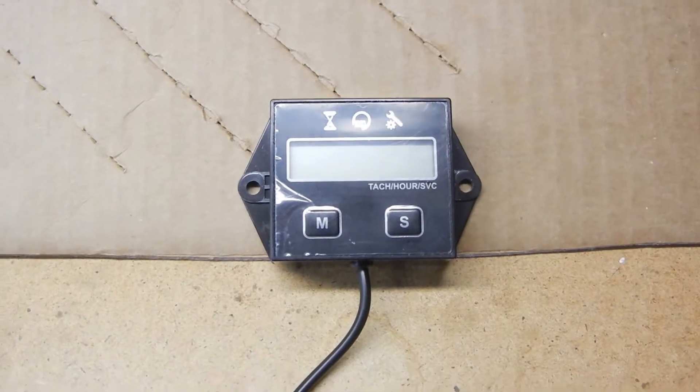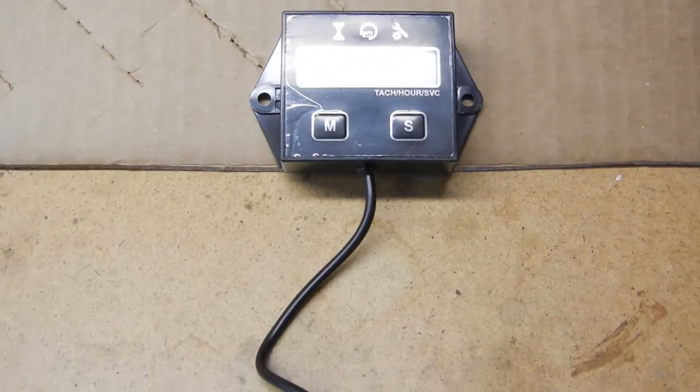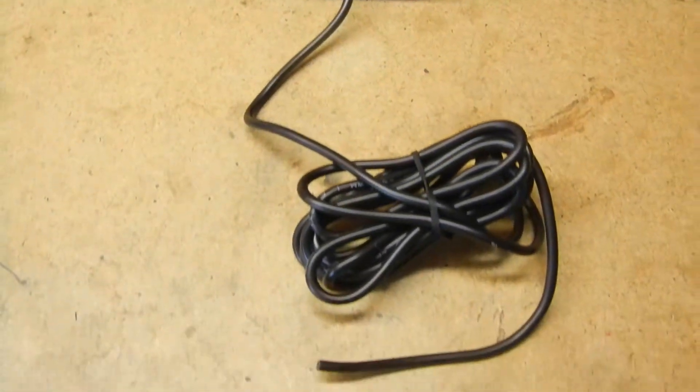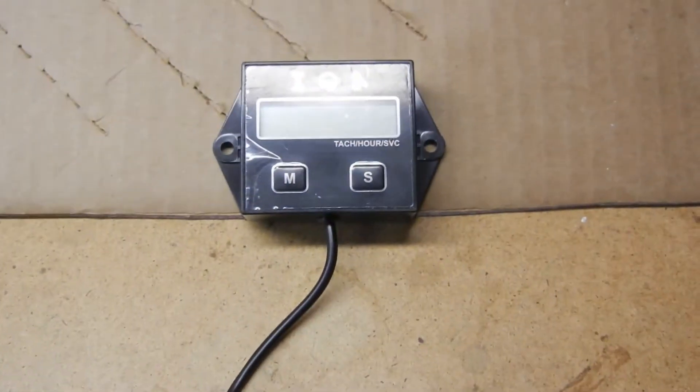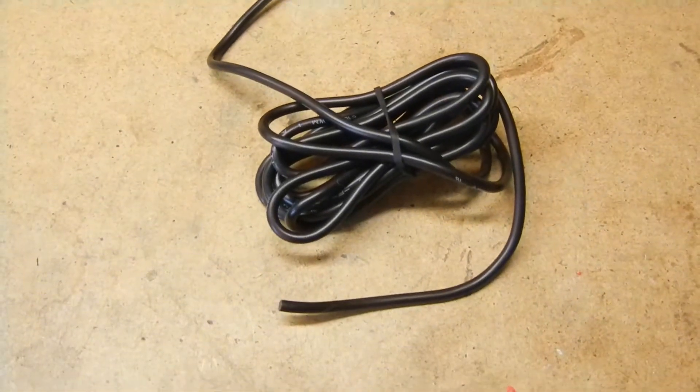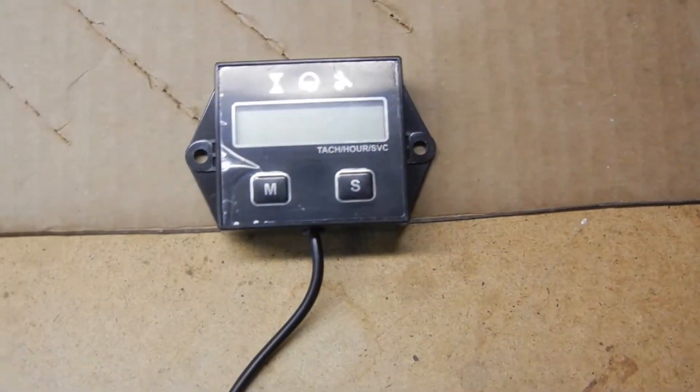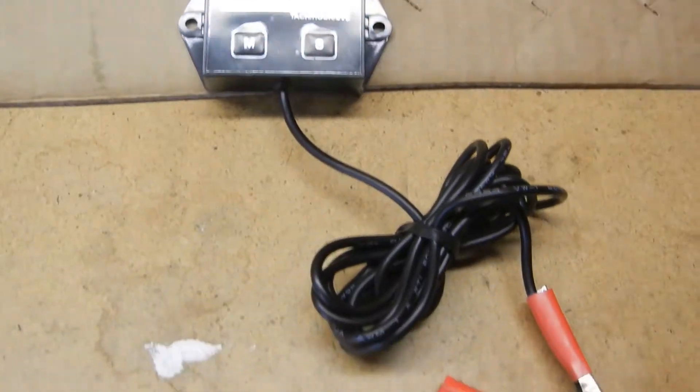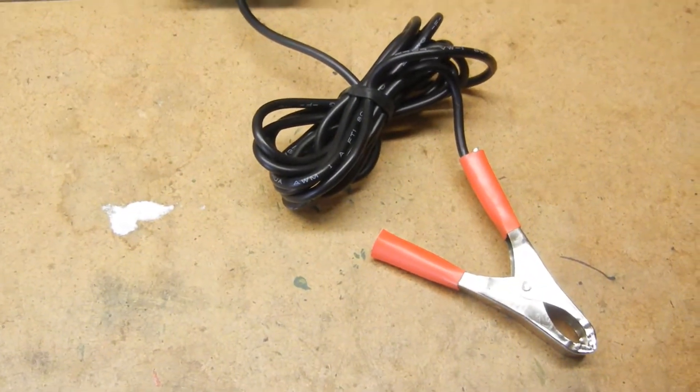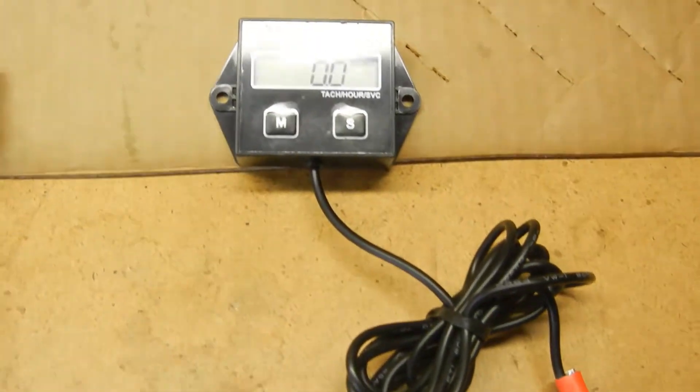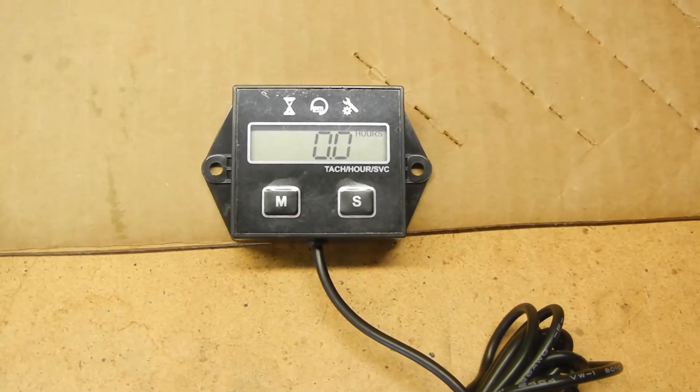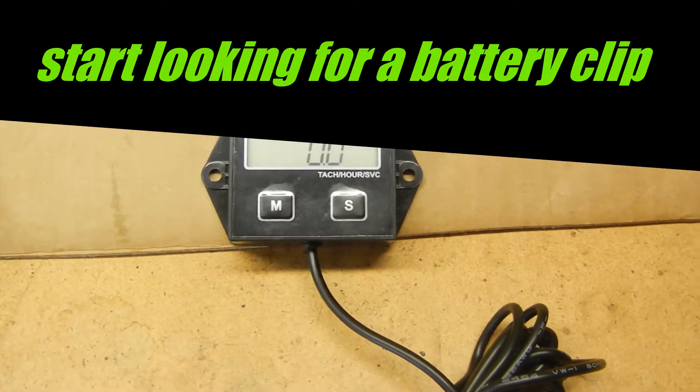If you're one of the thousands of people who have one of these small engine tachometers you can purchase on Amazon for maybe fifteen bucks, where you wrap the cord around the spark plug of your small engine, I'm going to show you how to easily convert it to one with an alligator clip or battery clip that you can easily move from one small engine to another. Stay tuned.